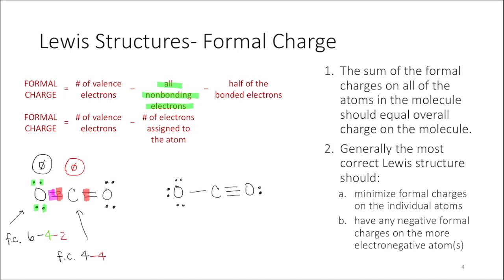For the last oxygen in structure one: formal charge equals six valence electrons minus four non-bonding electrons minus two (half the bonded electrons, one from each bond). Six minus four minus two equals zero. So in structure one — the structure on the left — every atom has a formal charge of zero.